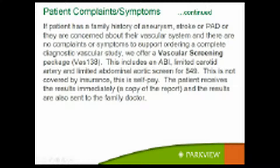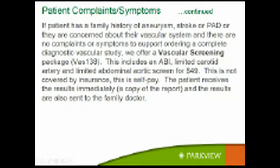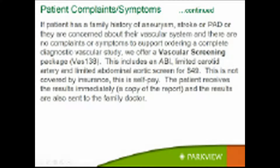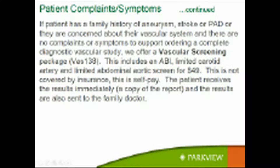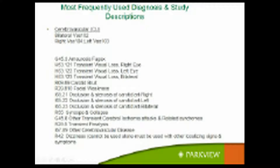For patients with a family history of aneurysm, stroke, or peripheral arterial disease — insurance companies will not cover that — the best thing to do is order a vascular screening at $49. We give the patient results right then and there; they take a copy with them, and if the doctor is in Epic or has a fax number, we send a copy of the report. The Parkview screening bus that many of you know is no longer around.